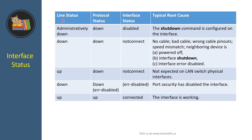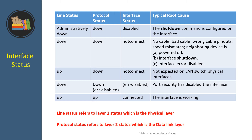Let's look at this table — it lists common statuses of a switch interface. As you know, the interface status is a combination of the line status and the protocol status. Line status refers to Layer 1 status, which is the physical layer, or simply the status of the physical connection. Protocol status refers to Layer 2 status, which is the data link layer.